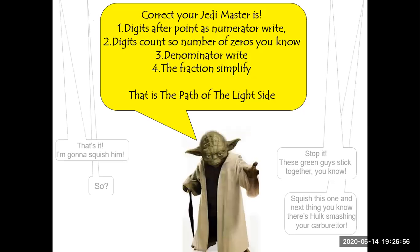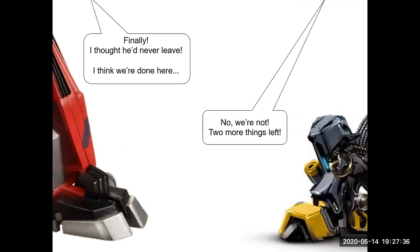Do not forget to simplify the fraction. Correct! Your Jedi master is: one digit after point as numerator, two digits count, so number of zeros you know, three denominator, four. The fraction simplify. That is the path of the light side. That's it, I'm gonna squish him! Stop it, the green guys stick together, you know. Squish this one and next thing you know there's Hulk smashing your carburetor. Finally, I thought he would never leave.